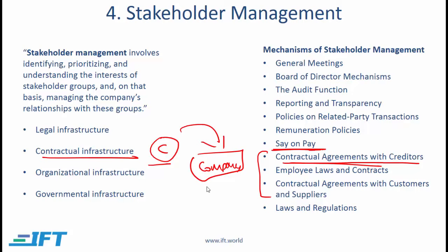Employee laws and contracts clearly define the rules and responsibilities of both employees and the company, and can also encompass codes of ethics and business conduct. Contractual agreements with customers outline what the company provides and what it expects in return. Similarly, contractual agreements with suppliers define the roles and responsibilities of both parties.